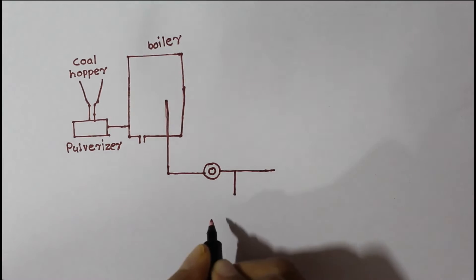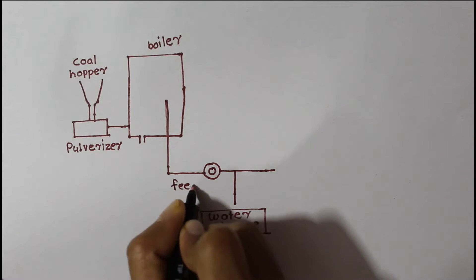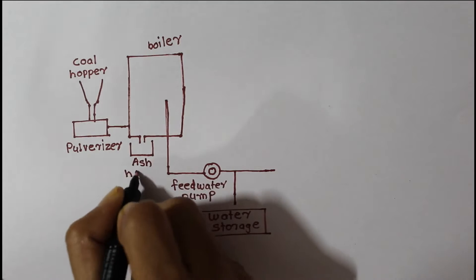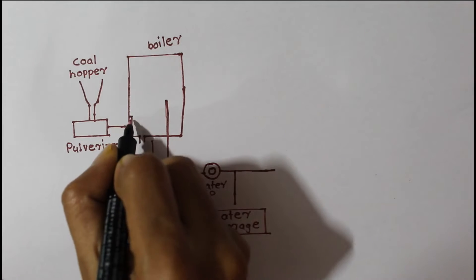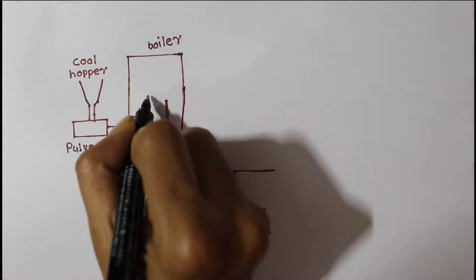Boiler is required to boil water with the help of burnt coal. This is water storage. Two storage required: one is water, second coal. Feed water pump. Ash hopper to remove ash.